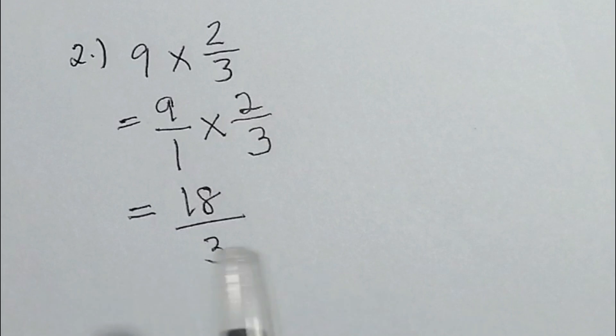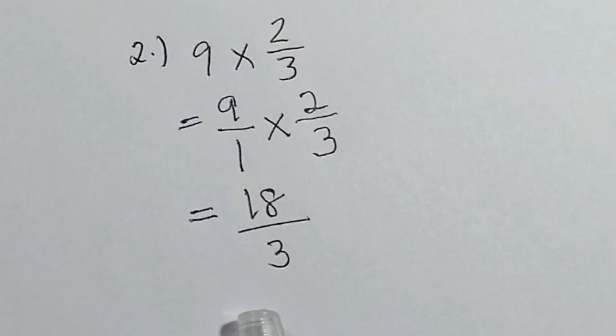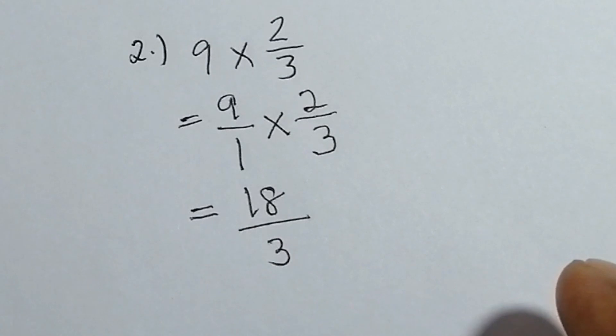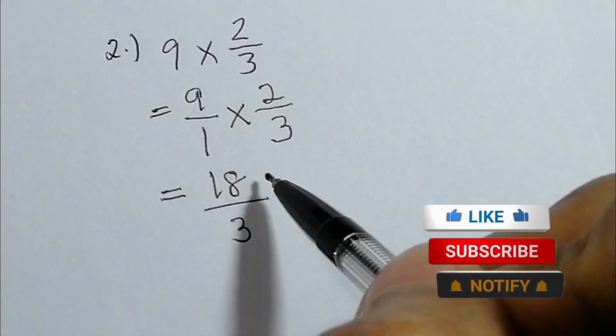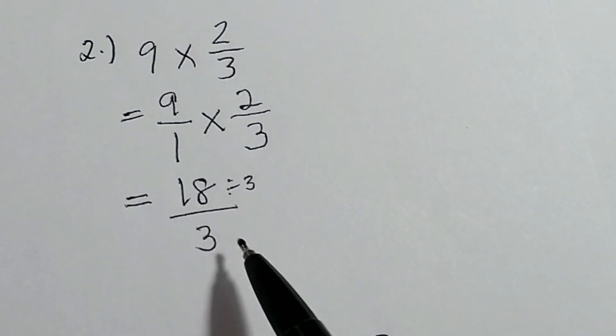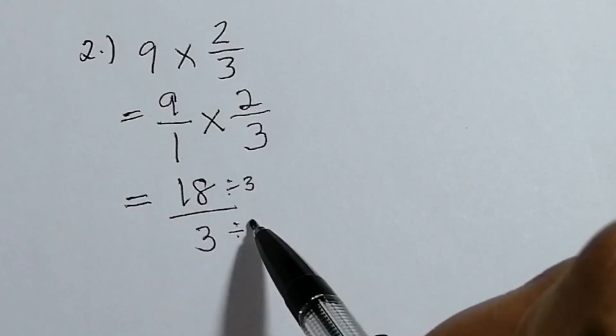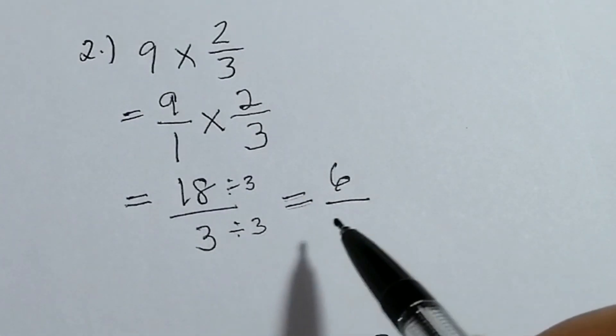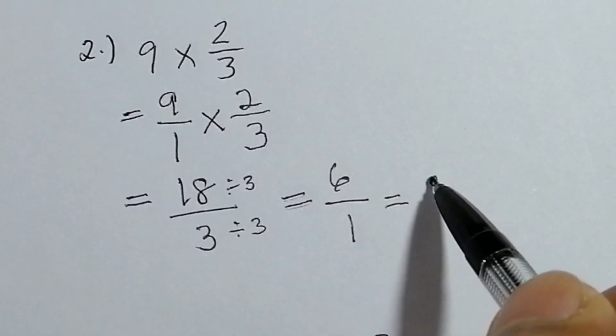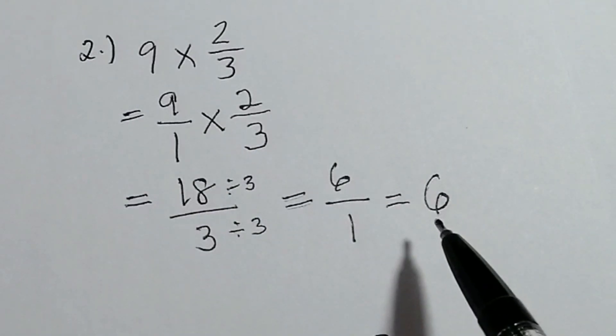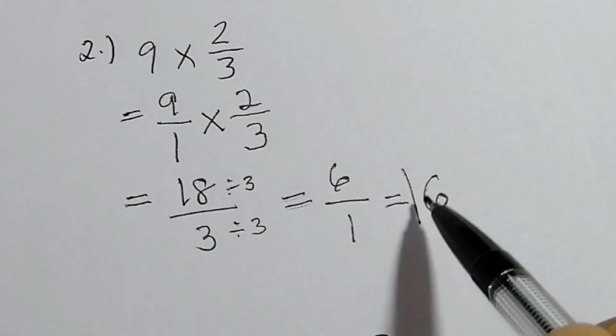Ngayon, eighteen over three, pwede ba natin i-reduce to lowest term? Yes. Papaano? So ang gagawin natin, i-divide natin yung eighteen sa three. O kaya mag-isip tayo ng number na pwede natin i-divide sa eighteen at saka three. Pwede yung three, di ba? Both numerator and denominator divide natin sa three. It's equal to eighteen divided by three is six. Three divided by three is one. And then six divided by one is six. Ang answer natin is ang product ng nine times two over three is six. So this is our final answer.